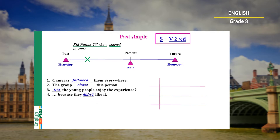Look again at the sentences from our text. Look at sentence number one and number two. Cameras followed them everywhere. 'Followed' is a regular verb, so to make a positive sentence we use subject 'camera' and then verb 'followed' with ending -ed. The second sentence: The group chose this person. 'Chose' is an irregular verb, so we use its second form. Subject plus verb form number two.